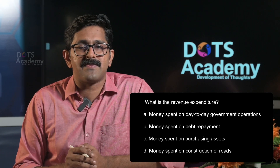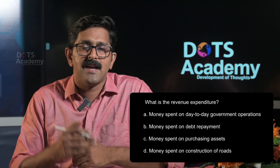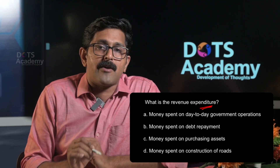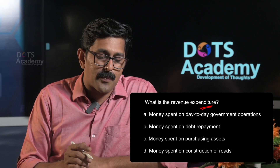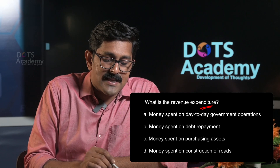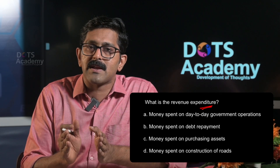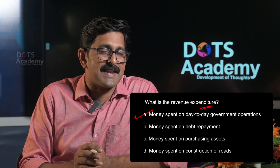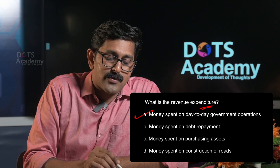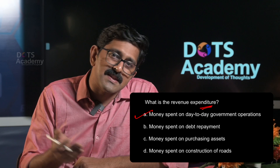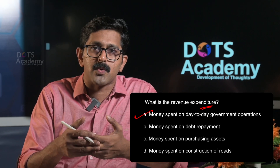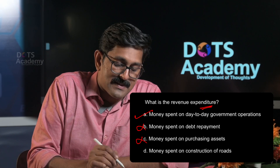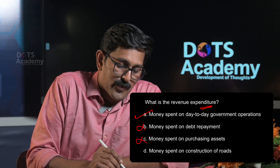What is revenue expenditure? We already discussed capital and revenue receipts. Revenue expenditure involves one-year, day-to-day transactions. The options include: money spent on day-to-day government operations, money spent on debt repayment, money spent on purchasing assets, and money spent on construction of roads. Purchasing assets or long-term investments such as construction of roads are capital expenditure, not revenue. Money spent on day-to-day government operations is the correct answer for revenue expenditure.